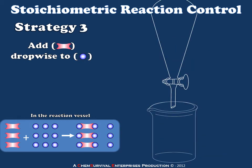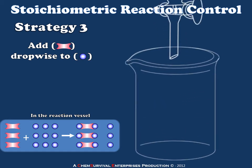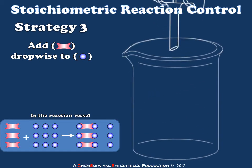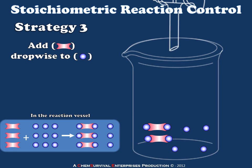If instead we were to add the doubly-reactive species to the singly-reactive species, let's take a look at what happens. Here I have a flask containing the blue material, to which I'll be adding my pink material. As I add it, there's a large excess of blue, which means that I favor formation of the doubly-functionalized material.